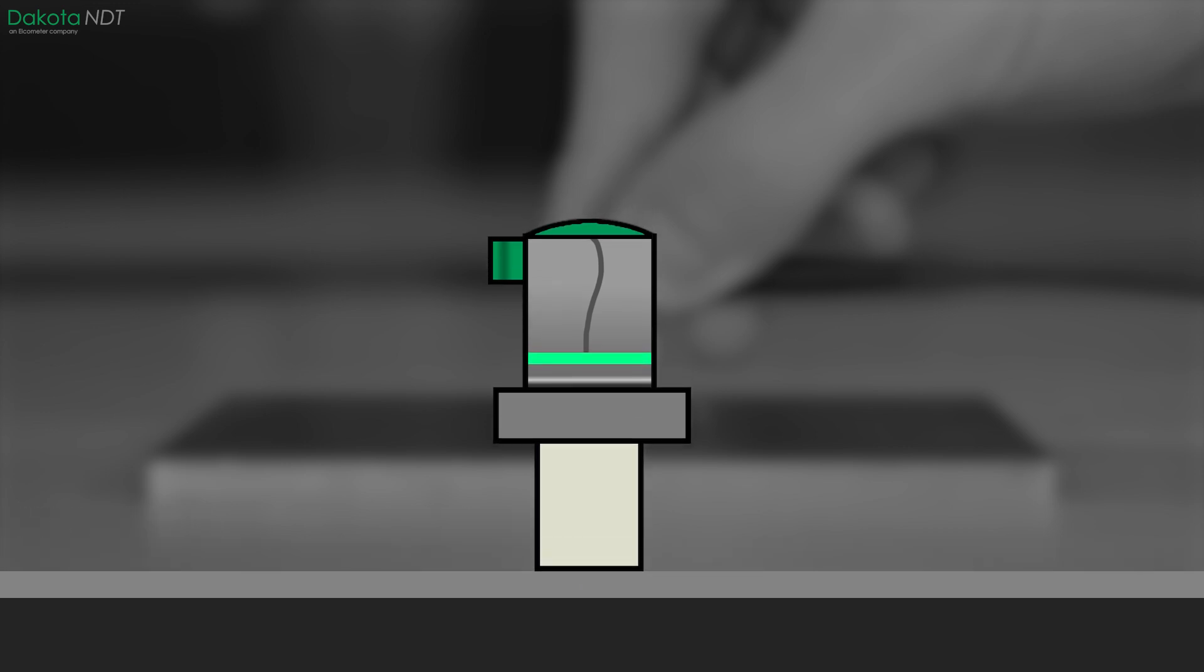For measuring extremely thin materials, as thin as 0.15 millimeters, the Dakota PCX is adjusted to measure between two echoes. While the gauge still reads the interface, it focuses on the time between two subsequent echoes.